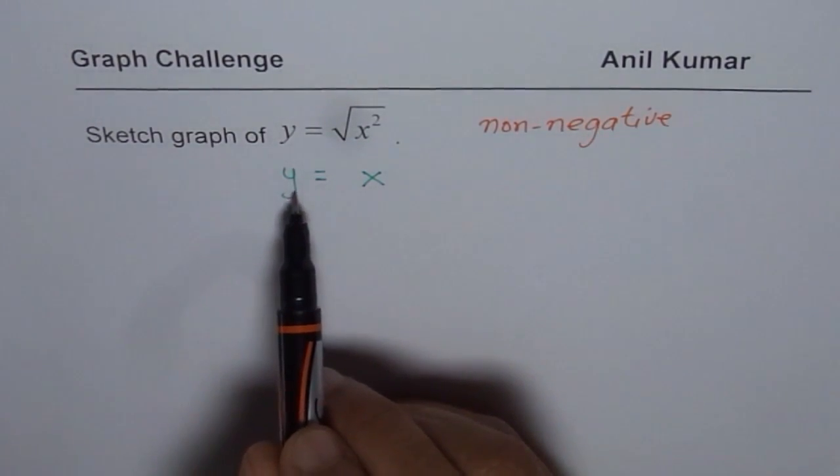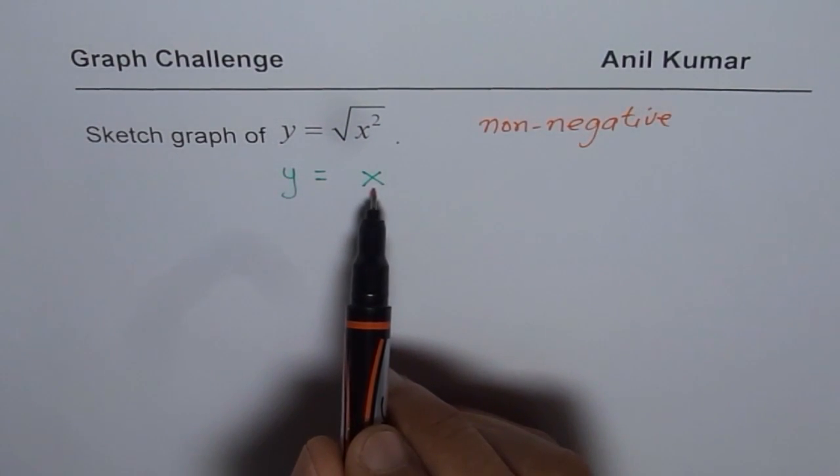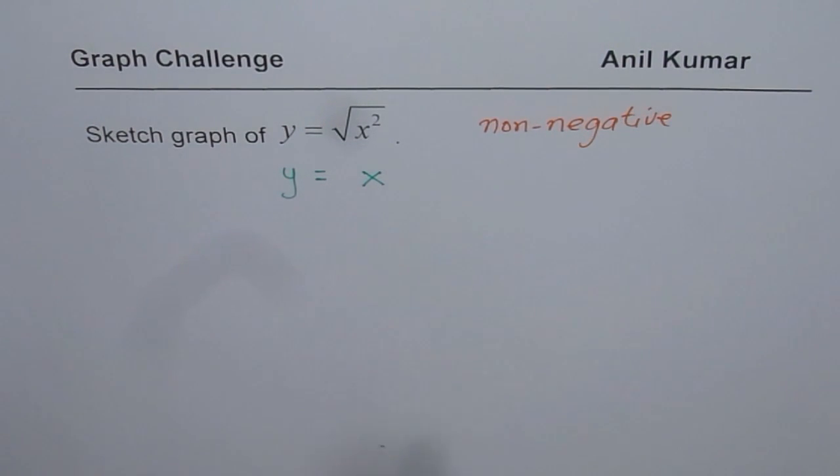However, the line y equals to x on the left side of origin is negative. So that should not be the right answer. So that is a clue for you to understand that y equals to x is not the same as square root of x squared, right? So that is very important.